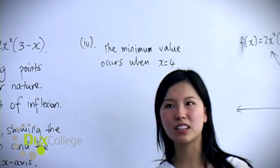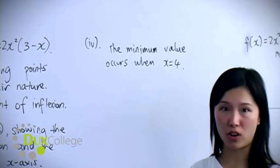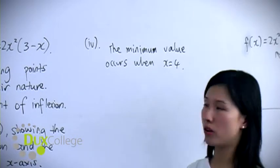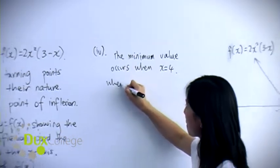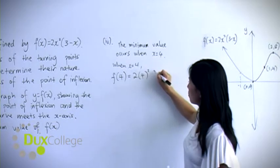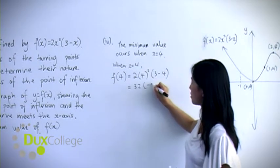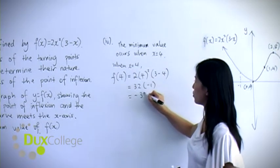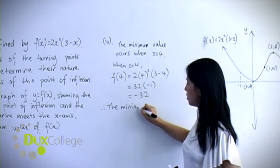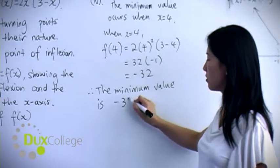Now a common mistake is students get confused when asked for the minimum value - whether it's the x value or the y value. The minimum value means the y value of your curve. So when x equals 4, f(4) equals... that would give us 32 times -1, so -32. Therefore, the minimum value is -32.